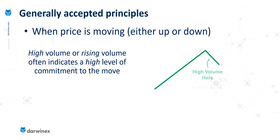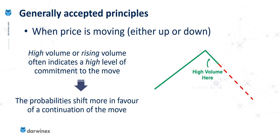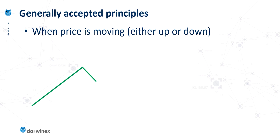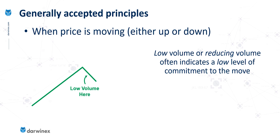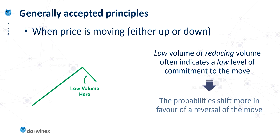What's generally accepted is that if you have high volume, or indeed rising volume, this is often an indication that there's a high level of commitment from the participants in the market to the move. And when there is that high level of commitment pushing the price down, the probabilities are in favor of a continuation of that move. Conversely, if there is low volume or reducing volume, then this is often an indication of a low level of commitment by the traders, which turns the probability slightly more in favor of the price changing direction and continuing with the trend.